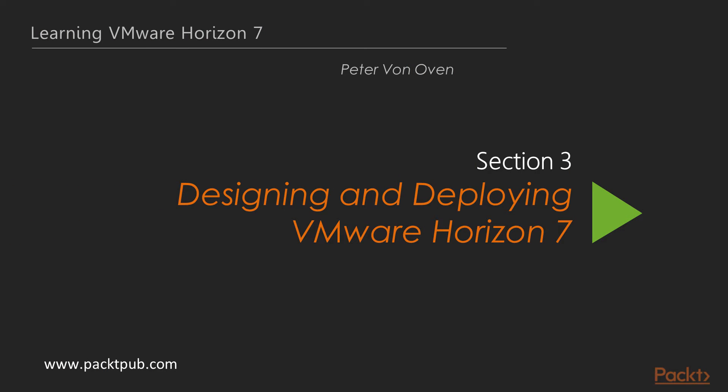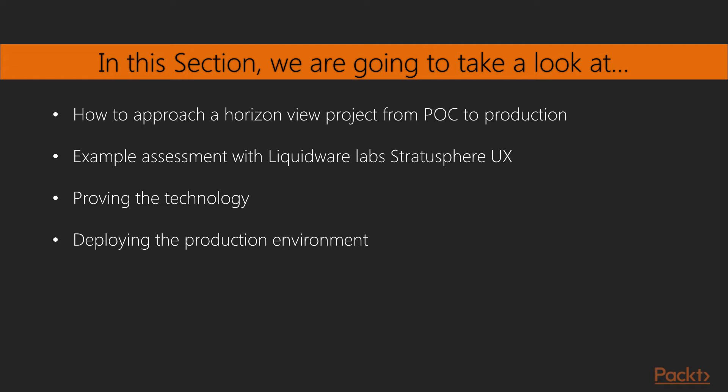Hello and welcome to the second section of this first volume, Designing and Deploying VMware Horizon 7. In this section we're going to concentrate on the design aspects of your Horizon 7 environment. We'll start with an overview of how you should approach the project and the steps and processes you need to work through, from building out your initial business case to proving the technology and then finally deploying your production environment.